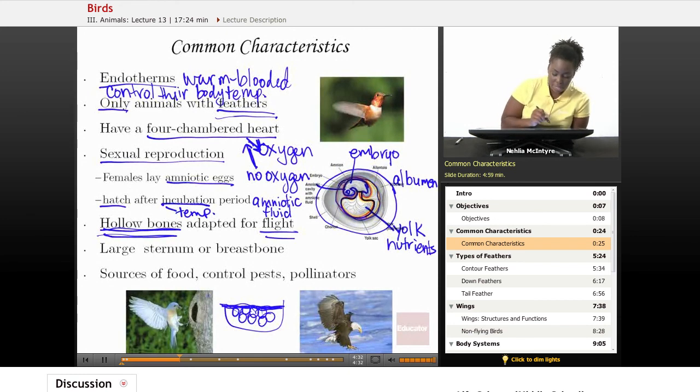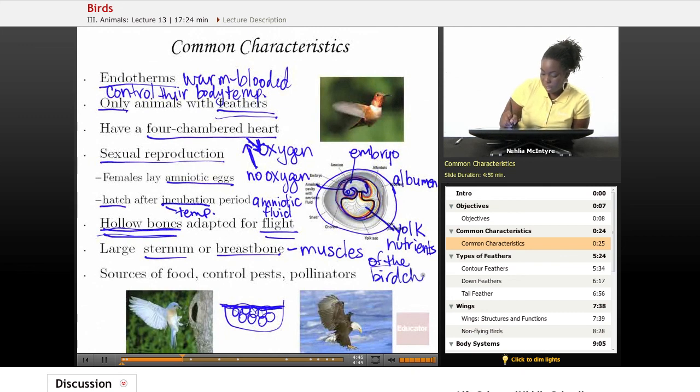And also they have a very large sternum or breastbone, which is connected to the muscles of the bird chest. And that's good because birds are able to fly, they have very big, strong chest muscles, and so they need that support from that large breastbone to support their muscles.